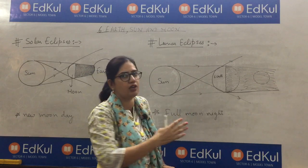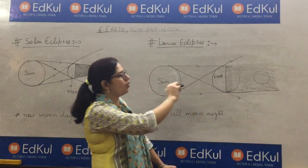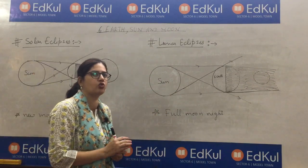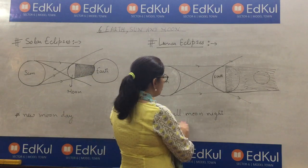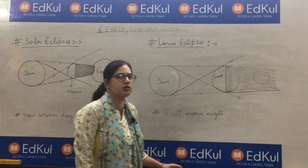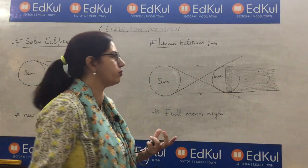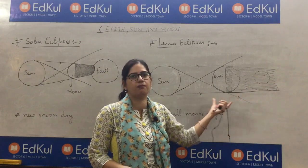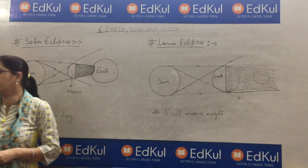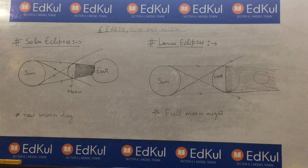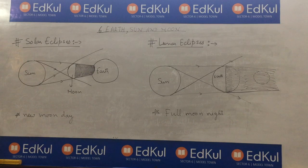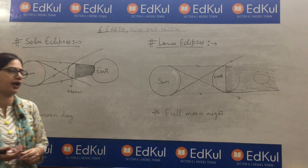So, the earth comes between the sun and the moon, blocking the path of the sun's light that is going to the moon. During this time, you can't see the moon. The shadow of the earth falls on the moon, causing the moon's apparent darkening. A lunar eclipse occurs when the earth comes between the sun and moon during its revolution, and it normally occurs on a full moon night.